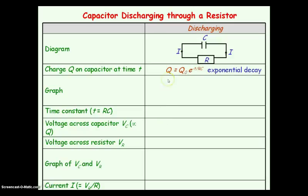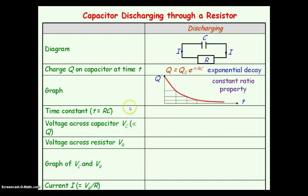Plotting a graph of the charge stored on the capacitor while it is discharging against time t gives you a graph where at time equals zero we have an initial charge of Q₀. It is showing the exponential decay because this has a unique special feature which is known as a constant ratio property, shown by the dotted lines. What the constant ratio property means is that for equal increments of time the charge stored falls by the same ratio — the constant ratio.